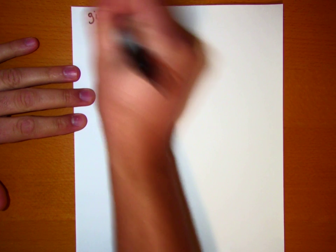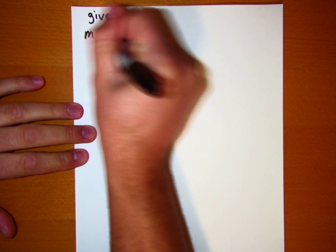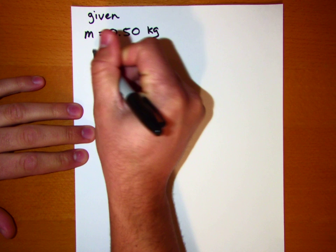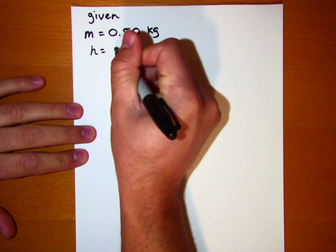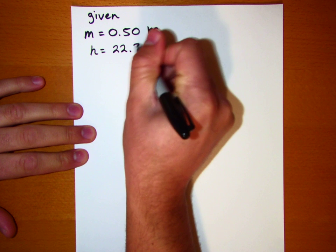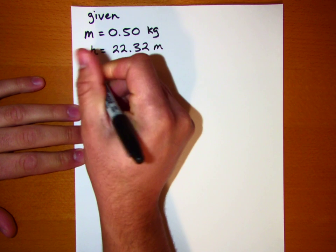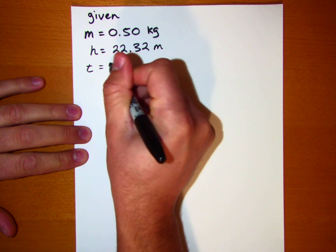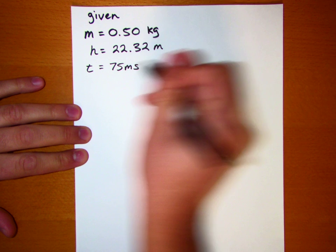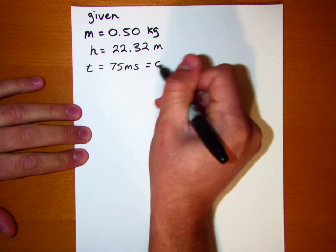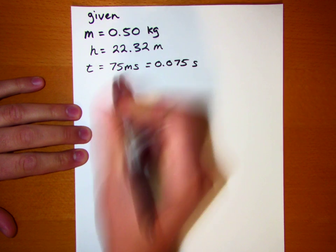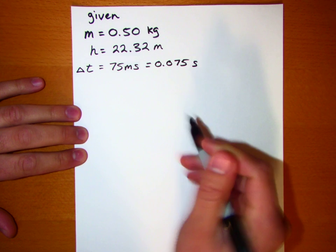Let's start with what we've got. Given: a ball of mass 0.50 kilograms is dropped from a height h equal to 22.32 meters. And when it hits the ground, it's in contact with the ground for t equals 75 milliseconds. We should convert this to seconds, so it would be 0.075 seconds. I'm going to call this delta t, for reasons which should be clear a little bit later.